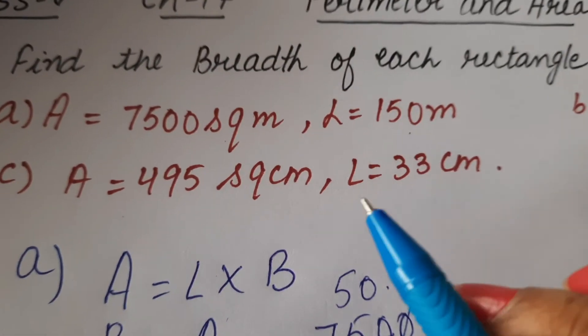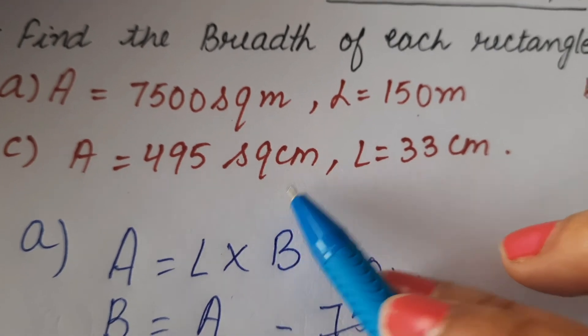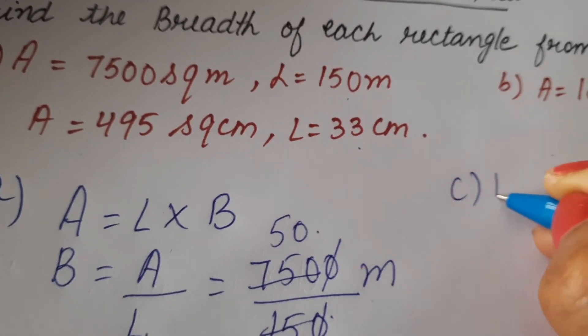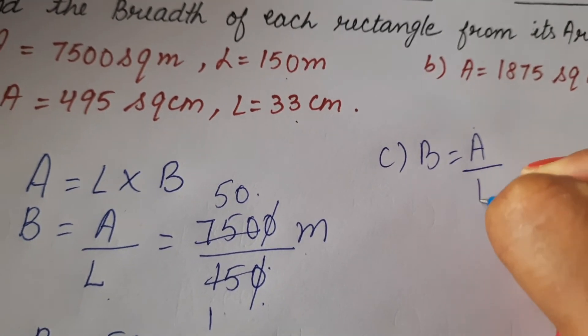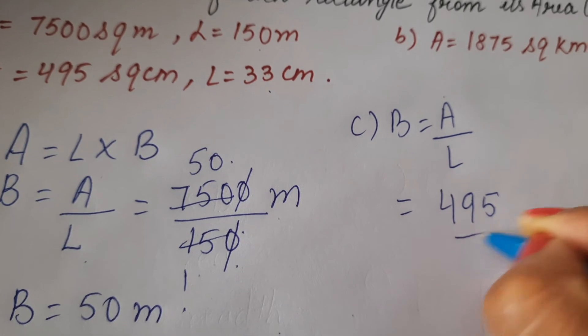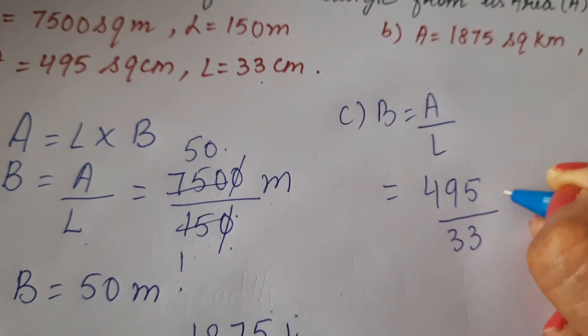Now let's start part C. In part C, area is 495 square centimeters and length is 33 centimeters. So breadth will be area divided by length, which is 495 divided by 33.